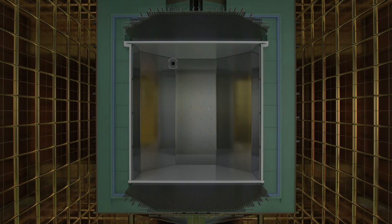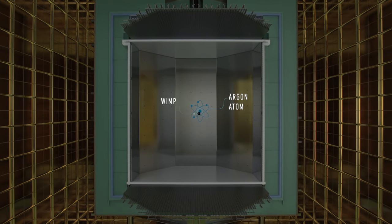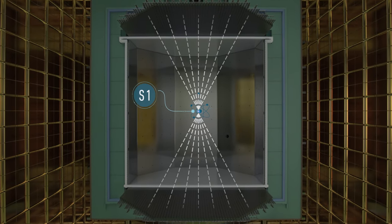When a WIMP collides with an argon nucleus, it produces primary scintillation photons, which are instantly detected by the silicon PMs inside the TPC. This first signal is called S1.